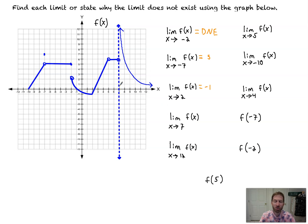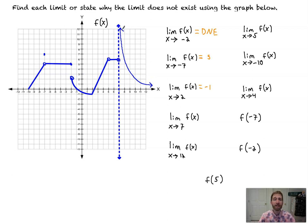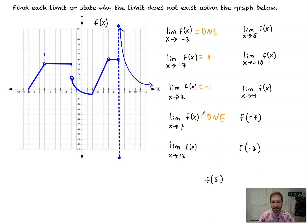The limit as x approaches 7 of f(x): at x equals 7, as we approach from the left-hand side we're approaching a y value of 6, but as we approach from the right-hand side the limit keeps going to positive infinity. Those are two different y values — one of them unbounded — so that limit does not exist.